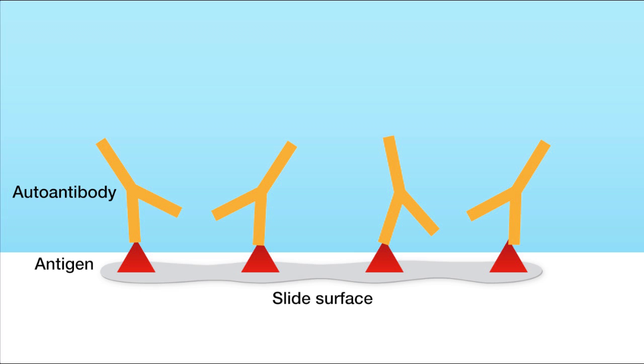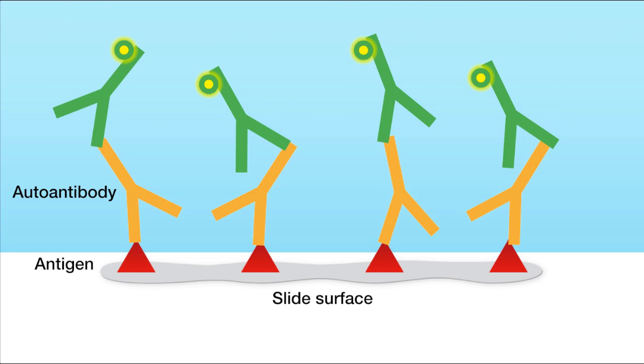Next, you add a fluorescein label conjugate. The conjugate will bind to the patient's antibody that is bound to the antigen on the slide.